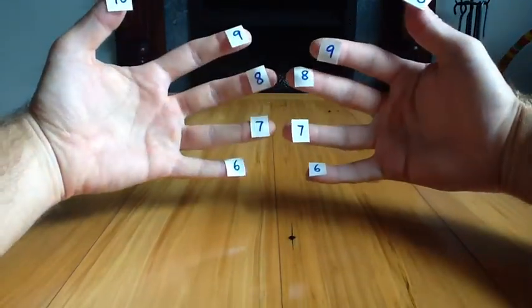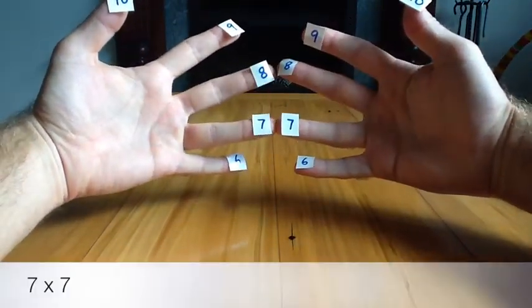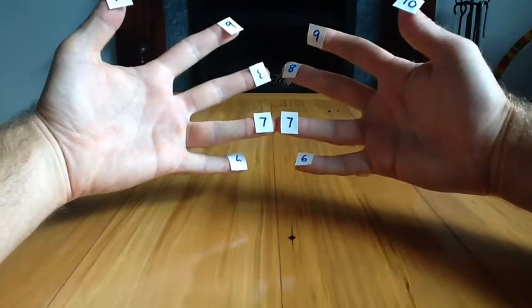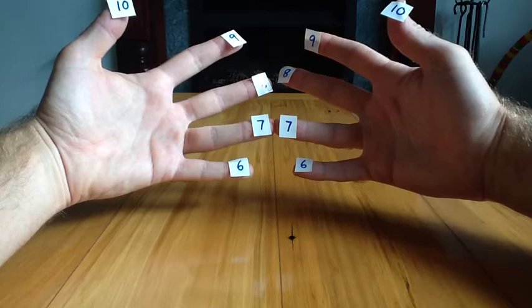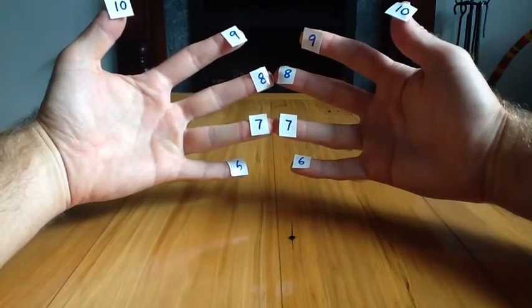Lastly, one more example. 7 times 7. We've got 3 times 3 is 9 and below we have 4 10s. So 7 times 7 is 49.